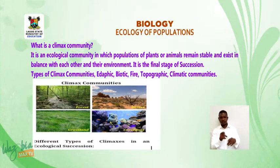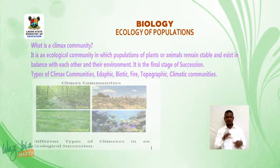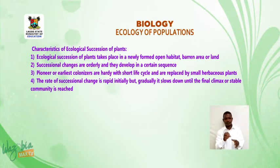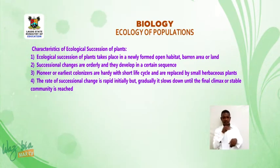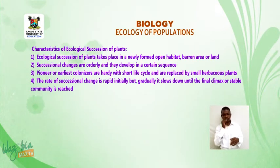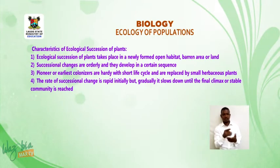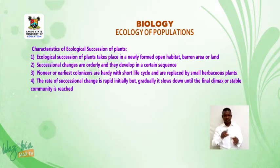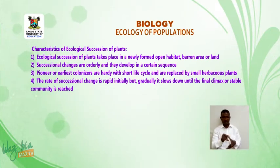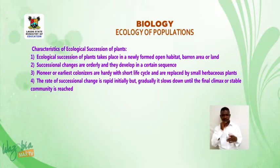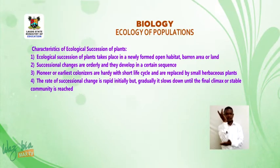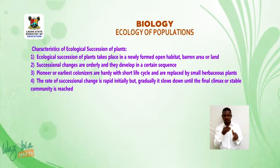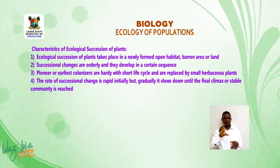Types of climax communities include edaphic, biotic, fire, topographic, and climatic communities. Characteristics of ecological succession of plants: one — ecological succession of plants takes place in a newly formed open habitat or barren area; two — successional changes are orderly and develop in a certain sequence; three — pioneer or earliest colonizers are hardy with a short life cycle and are replaced by small herbaceous plants.